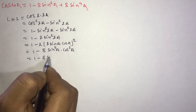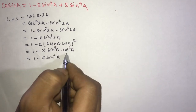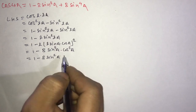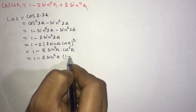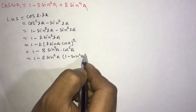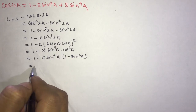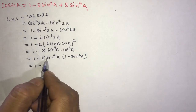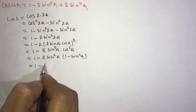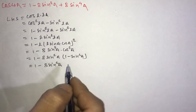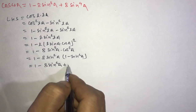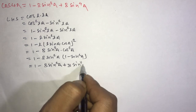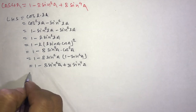Now, 1 minus 8 sine squared a as it is. Change cos squared a into 1 minus sine squared a. So we operate: 1 minus 8 sine squared a into 1 minus sine squared a, which gives 1 minus 8 sine squared a minus minus plus 8 sine squared a dot sine squared a, that is 1 minus 8 sine squared a plus 8 sine to the 4th a, which equals RHS. Proved.